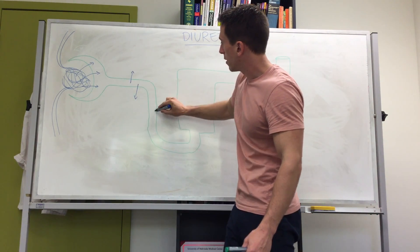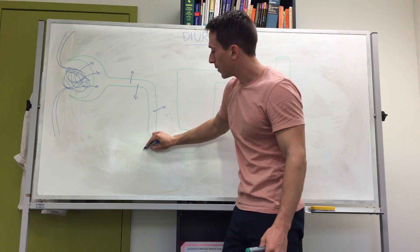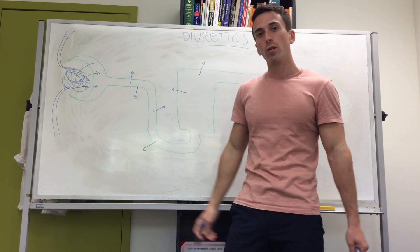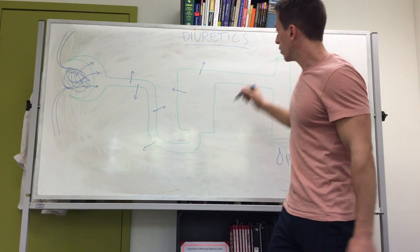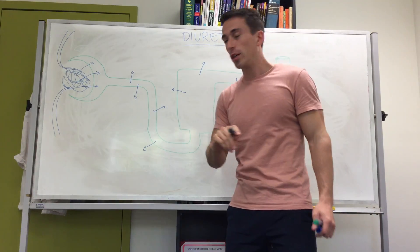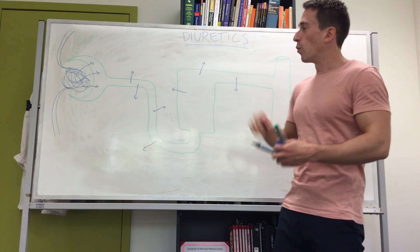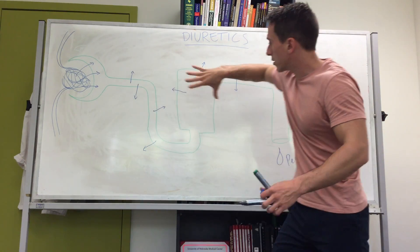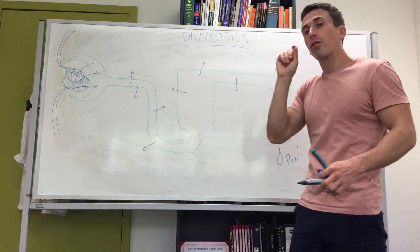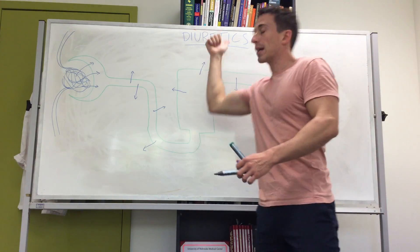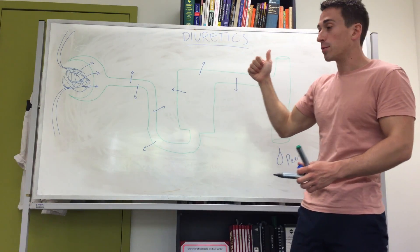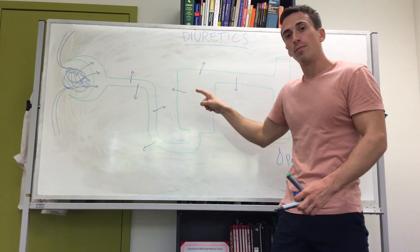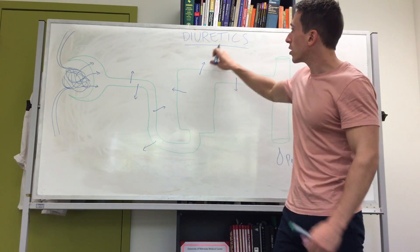So what happens? The substances within this lumen must get thrown back into the body. I'm recapping this basic renal physiology because you need to be aware that the diuretics act at different parts of this nephron — they're going to tell certain substances to stay within the tube or throw them back into the body.